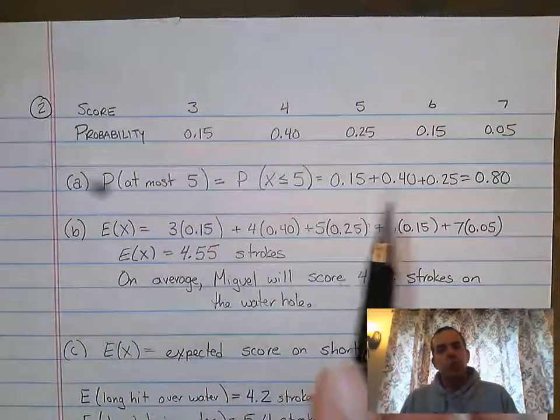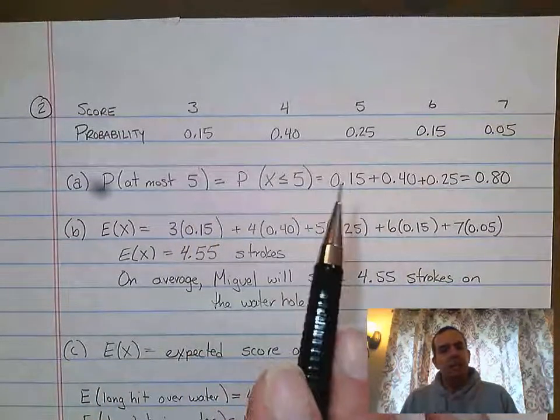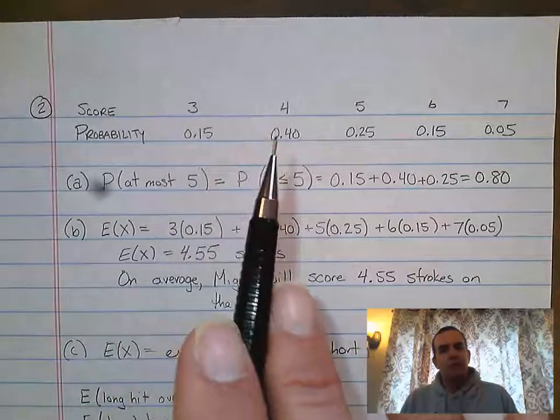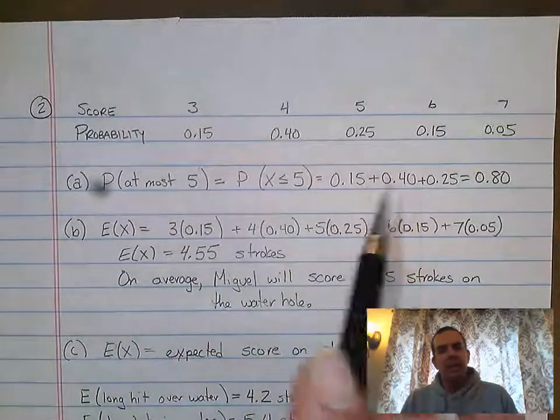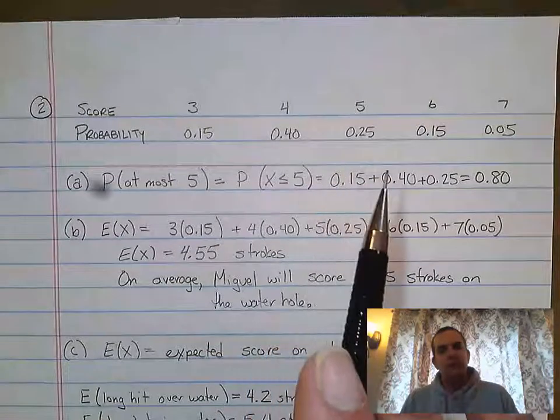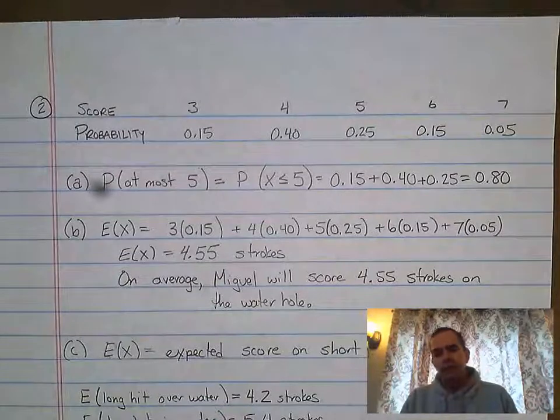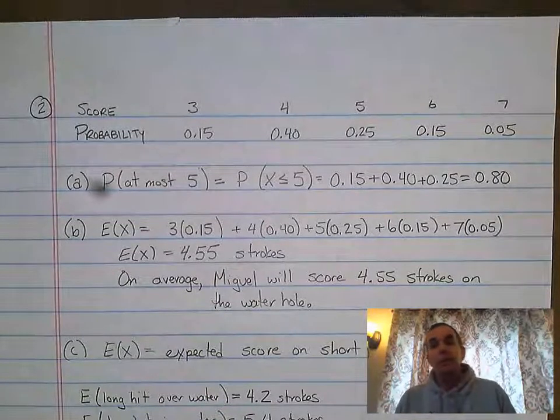In this case it's three numbers - the probability of three plus the probability of four plus the probability of five. When I add up those numbers, 15 plus 40 plus 25, it gives me 80. So there's an 80% chance of Miguel having a score of at most five when he plays this water hole at the golf course.